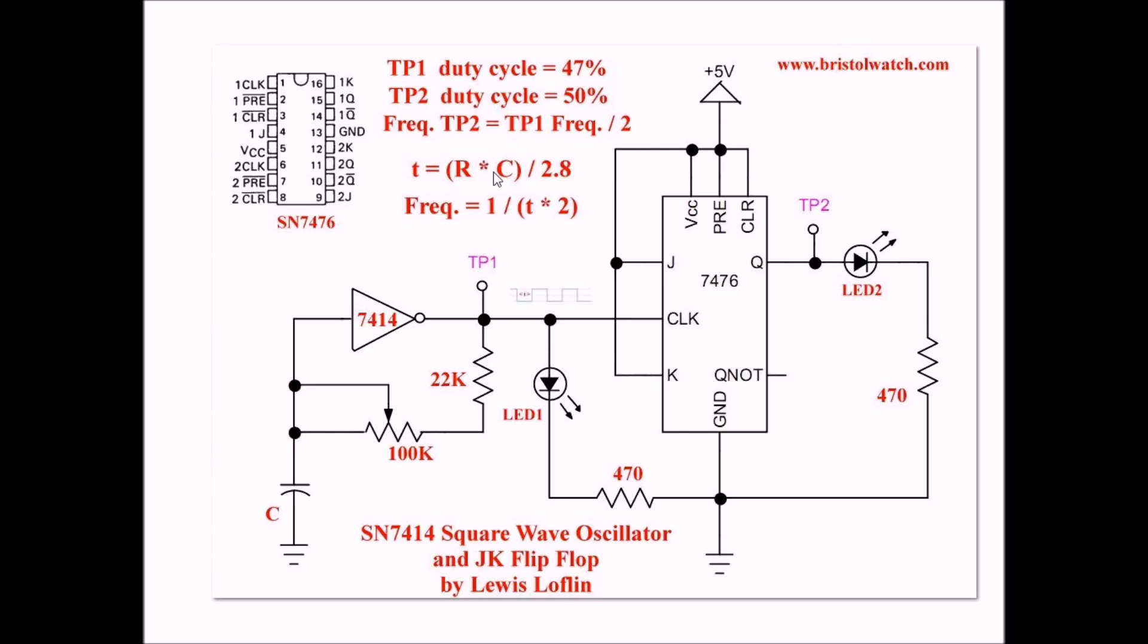Remember, you get a value T, that's R times C divided by 2.8, and to get your frequency, you take the reciprocal of T times 2. The thing to note, let's just argue at test point 1 that I have 1000 Hz. Consistently in every check that I did with this by itself, it came out to a 47% duty cycle. I'd like to have a 50% duty cycle. So let us say that test point 1 is 1000 Hz at 47% duty cycle.